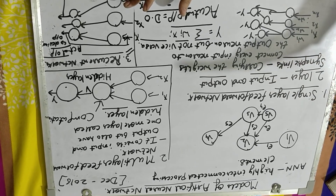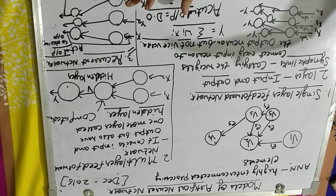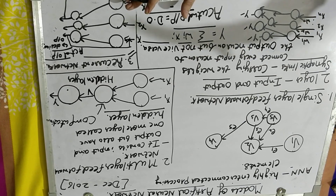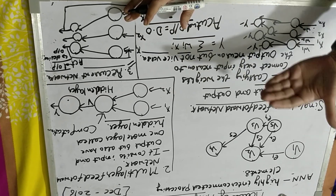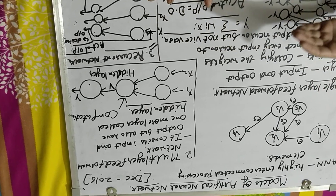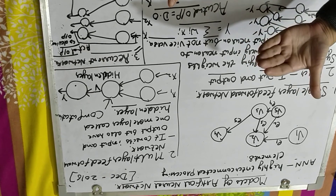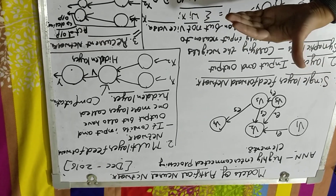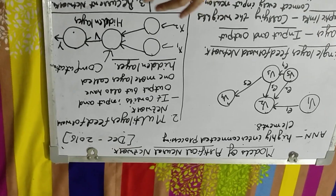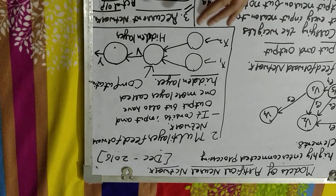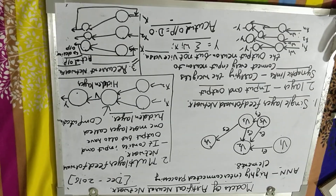So these three main parts are the models of artificial neural network. First, single layer feed forward network — two layers, input and output, feed forward. Second, multi-layer feed forward network — includes hidden layers between input and output for more processing. Third, recurrent networks — provides a feedback loop. When we need a feedback loop, we model the neural network structure as a recurrent network. This was your model of artificial neural network structure, which is an important topic.